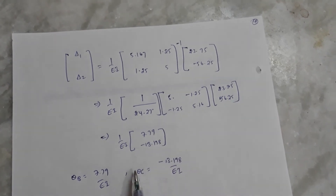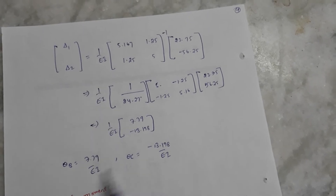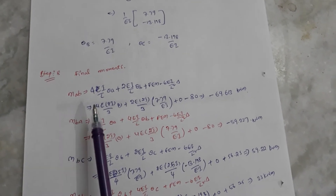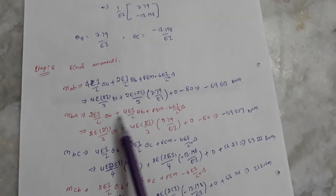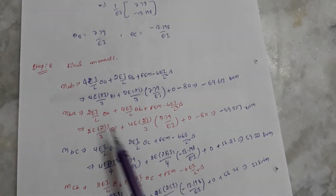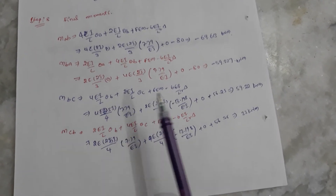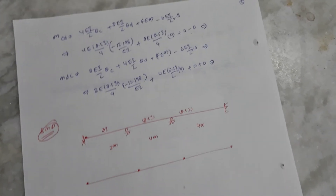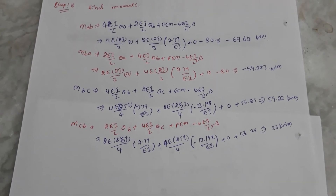Using theta B and theta C, we substitute into the slope-deflection equations to get the final end moments for each member: M_AB, M_BA, M_BC, M_CB, M_CD, and M_DC. The result gives M_AB equal to minus 69.613 kilonewton-meters.